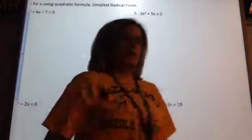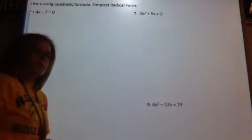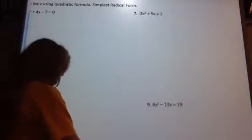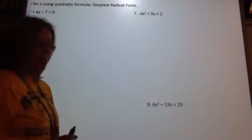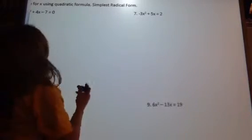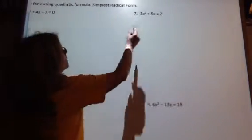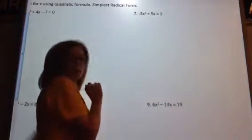Okay, so this is the 8-9 solving quadratic with the quadratic formula. This is part 1 but the second part of part 1. So let's look at number 7 here. We need to first set this equal to 0 so we can find our a, b, and c.